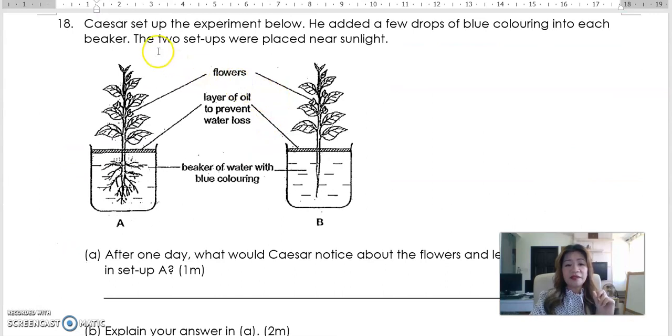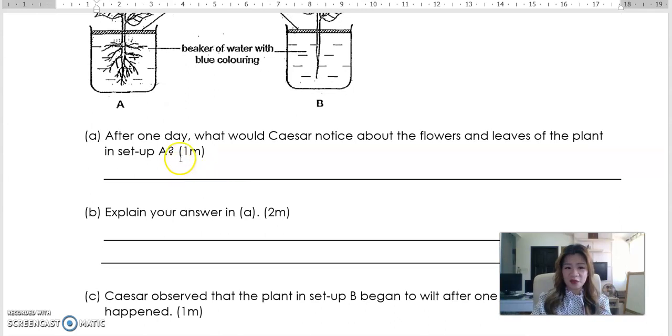Next question. Scissor set up the experiment below. Everything must be the same. Flowers, layer of oil on both sides to prevent water loss. So usually, they want to put a layer of oil in experiments that involve water to prevent evaporation. If you want to know what evaporation is, refer to my P4 water topic. It's in one of the YouTube videos. He added a few drops of blue coloring into each beaker. There's blue coloring here, blue coloring here. Very common experiment that you can do at home. Even in school, they will have this in their workbook, textbook, test papers. They will usually ask, we put color inside. What will happen to the flowers? The flowers will turn into the color you have added. It's always the same answer. Why is that so? So that is the question.